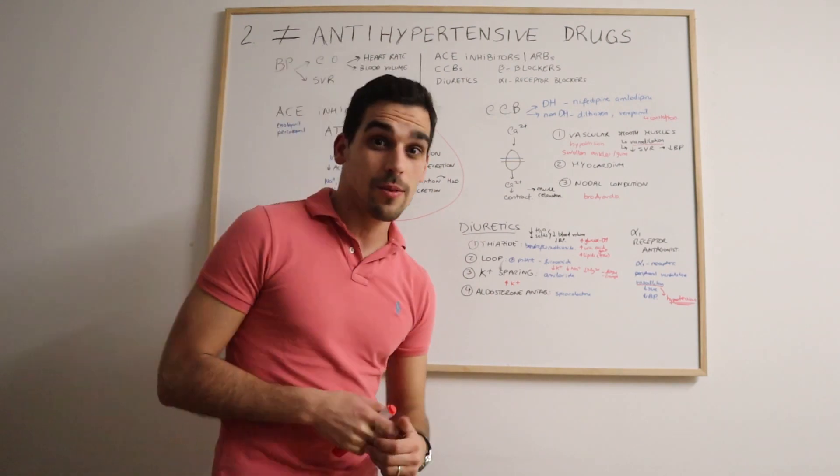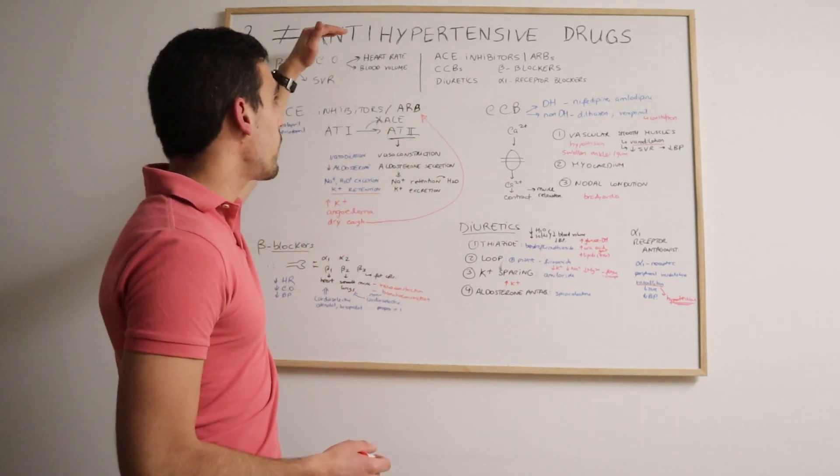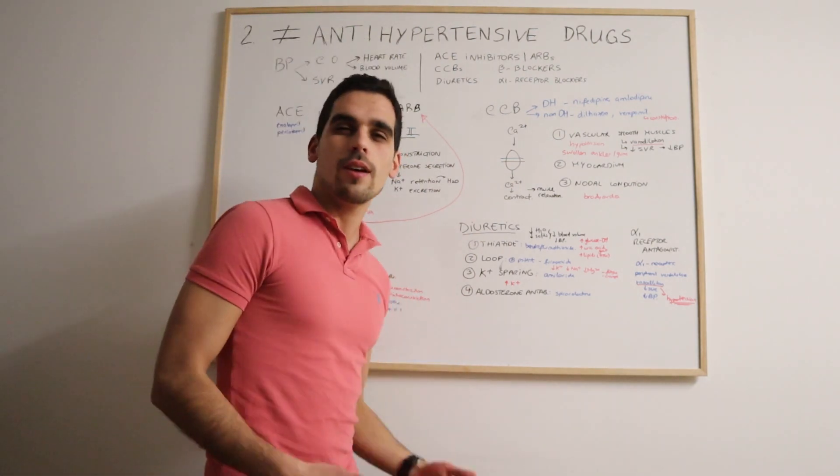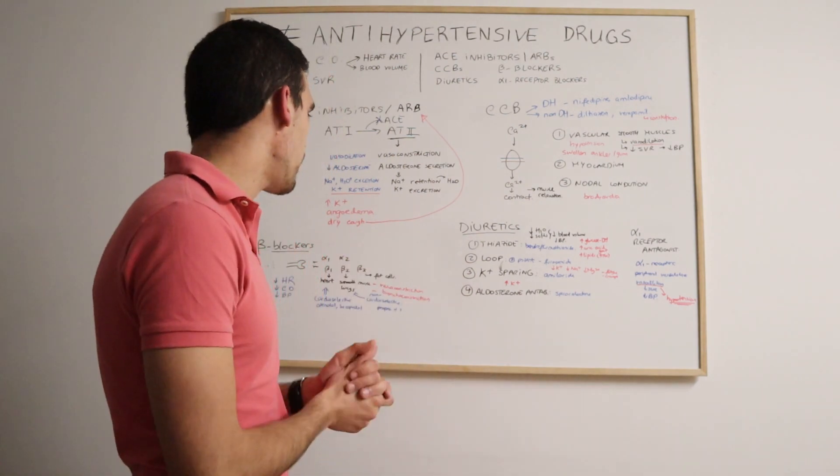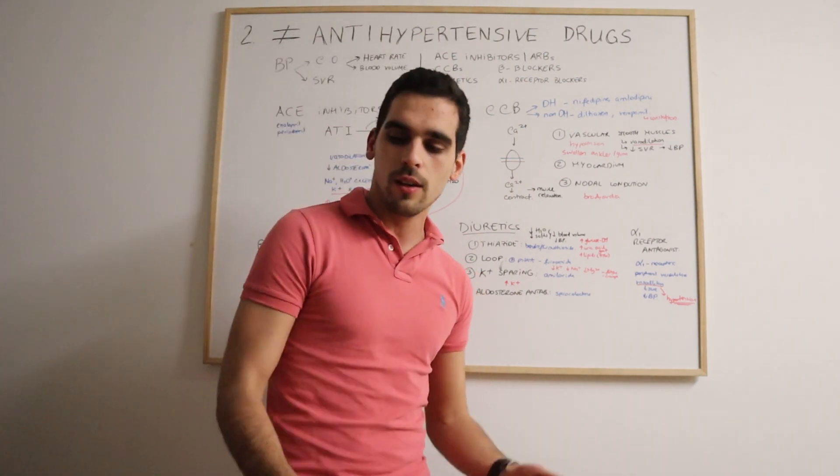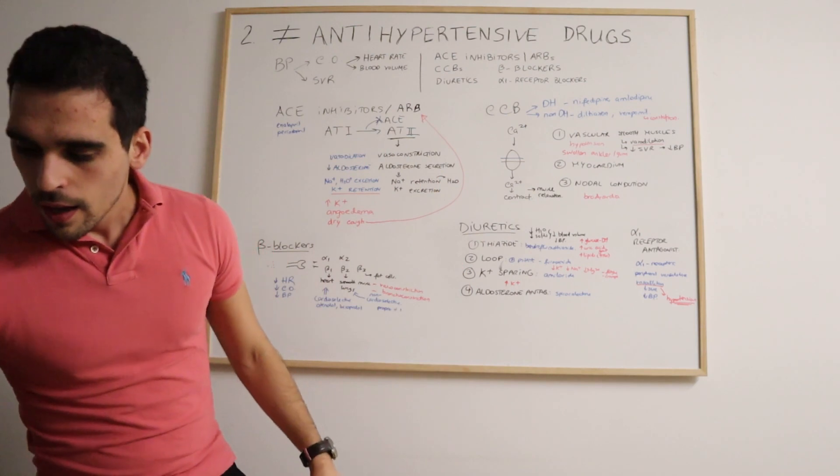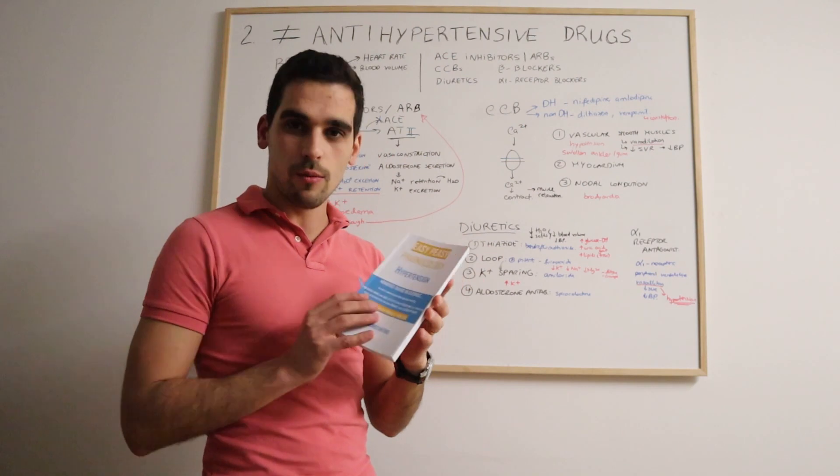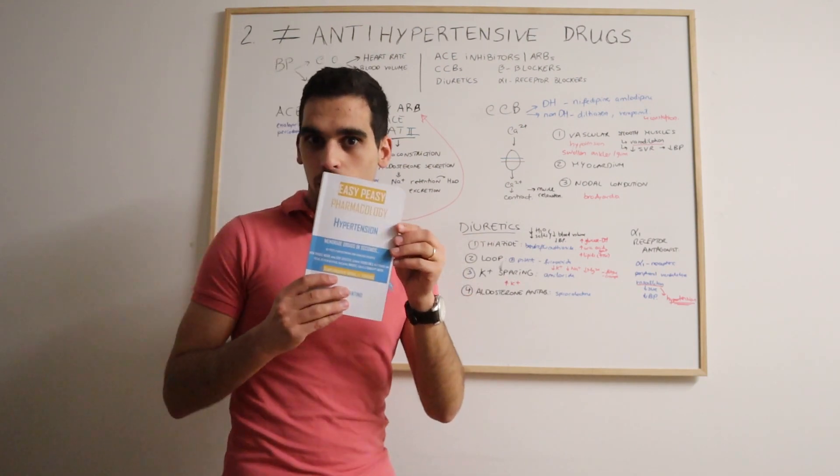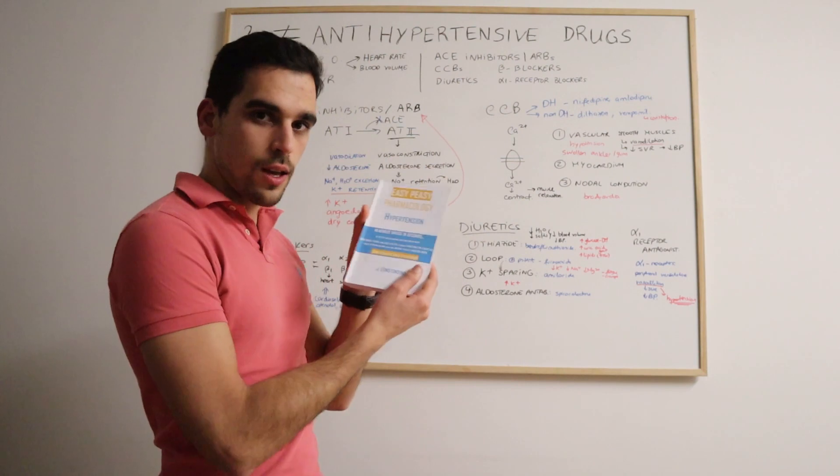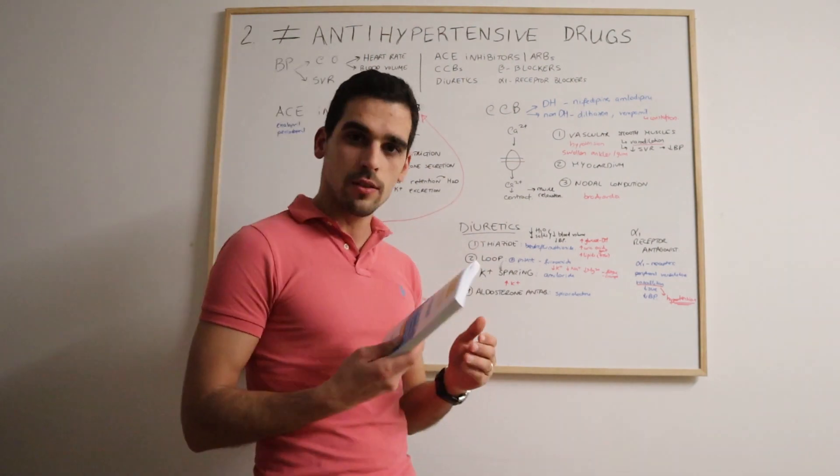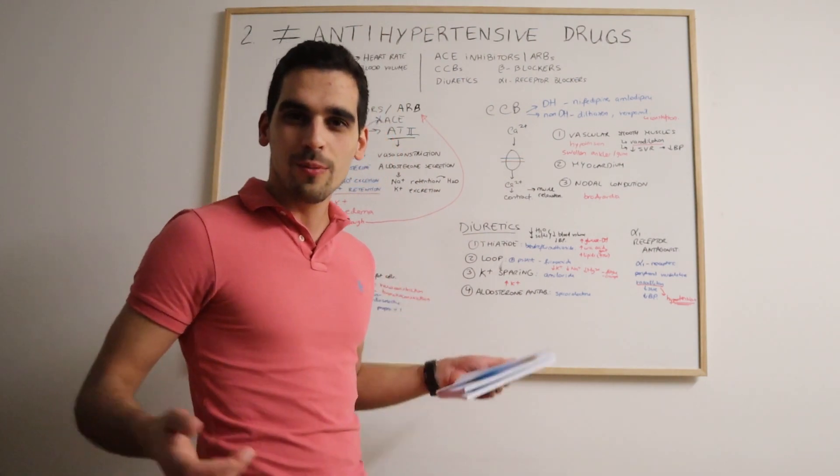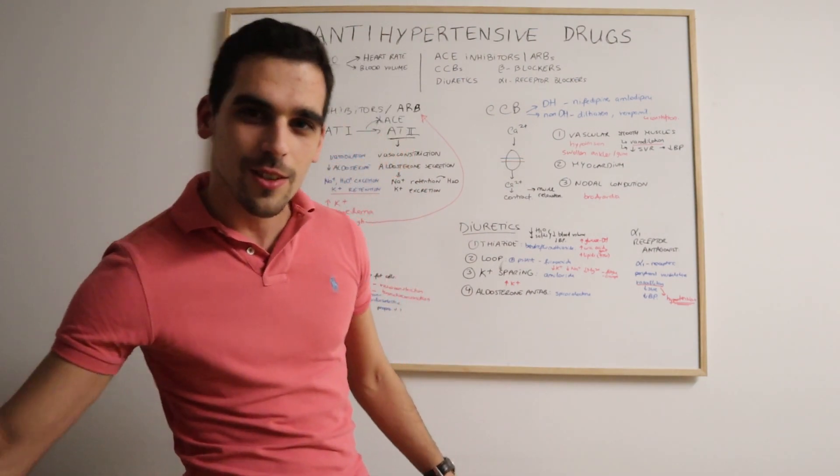That's pretty much it in terms of the main antihypertensive drugs. This might be quite a lot to take on, so maybe I would advise you just to rewatch this video as many times as you need and take your notes. As you may know, this video is part of the Easy Peasy Pharmacology book that I wrote. It's available on ebook version or paper version on Amazon. I will link it down below as well if you want to have a look at it. I hope that helps in your studies. Thank you so much. Bye.